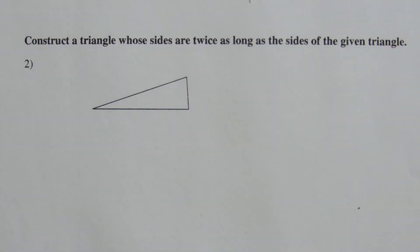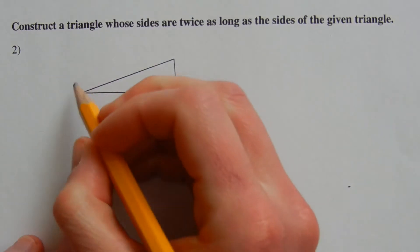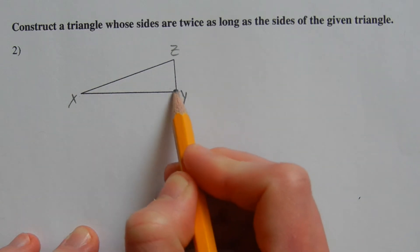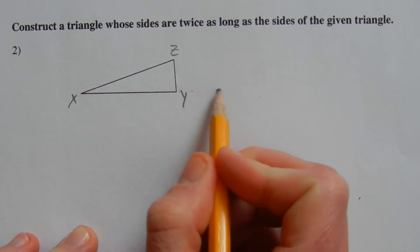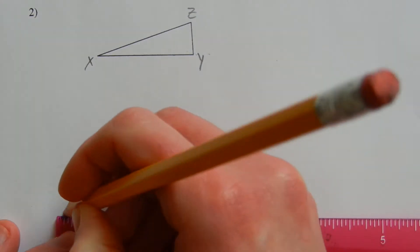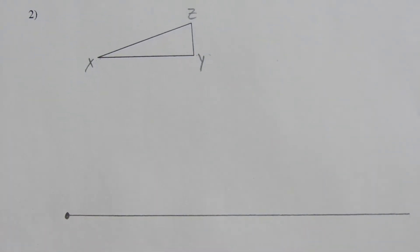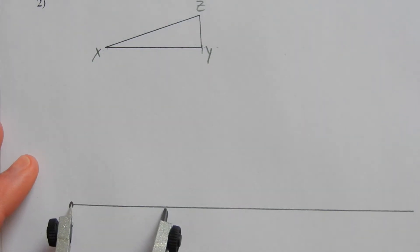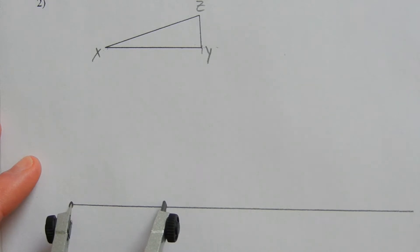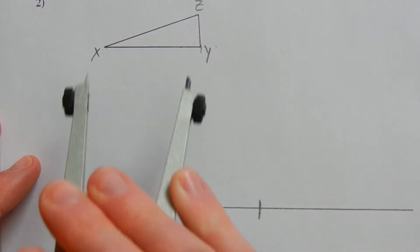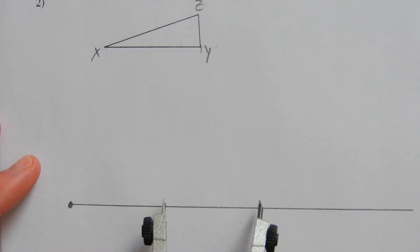Number two says to construct a triangle whose sides are twice as long as the sides of the given triangle. We have triangle XYZ, so we'll start with side XY and make that segment twice as long. Starting with a straight line, I take the measurement of XY, mark it from the new endpoint of my segment, then move my compass to that intersected point and make a new intersection. So I took the measurement XY and measured it twice using my compass.